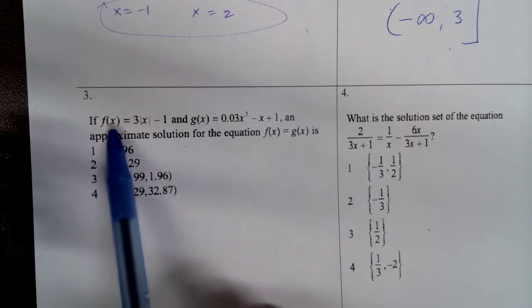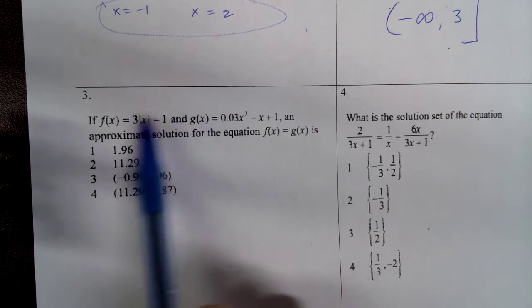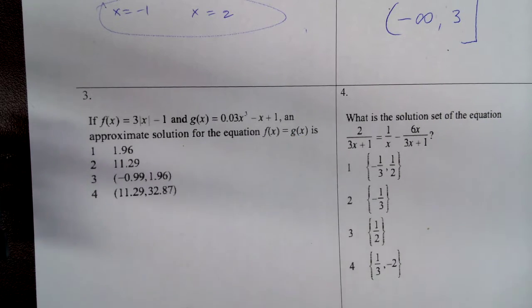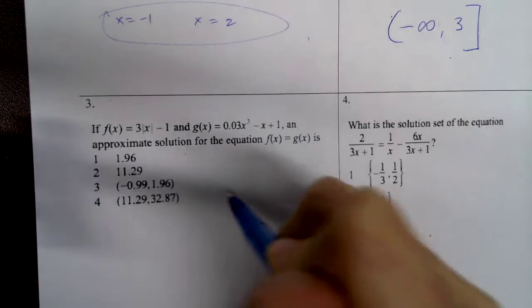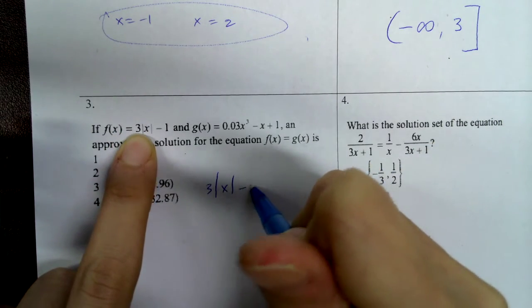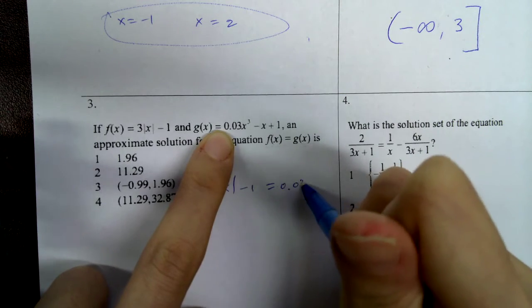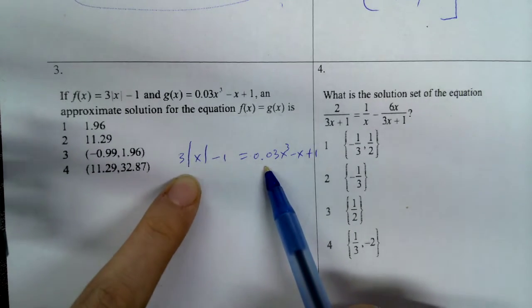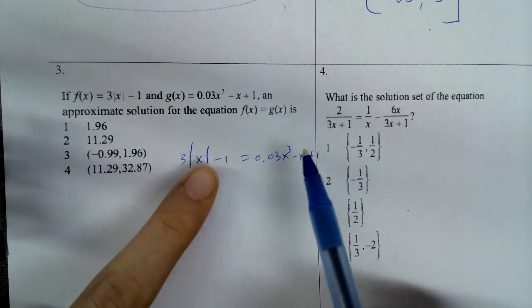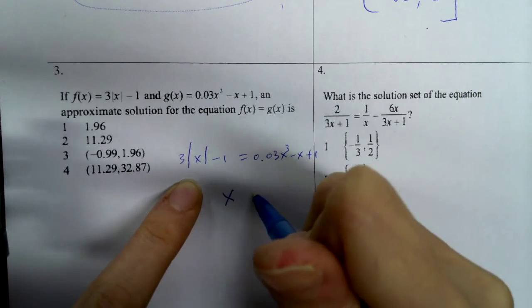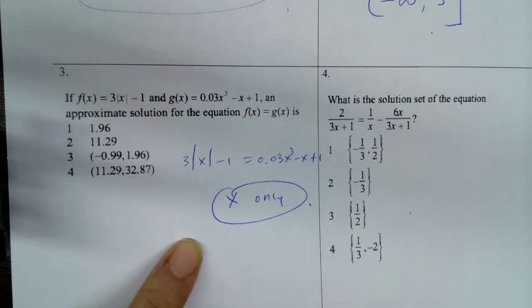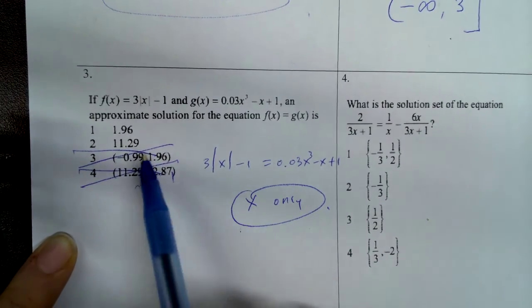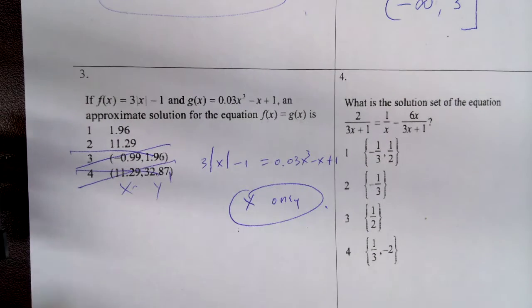Number 3, if f of x is this and g of x is that, so we're talking about two different functions, an approximate solution for the equation, f of x is equal to g of x. So let's actually just stick to what's given here. I'm going to set this equal to this. So if I were to solve this solution, the only solution I have is the x value. x is my only solution. So off the bat, I can actually eliminate answer choice 3 and answer choice 4 because they're giving me both x and y coordinate.